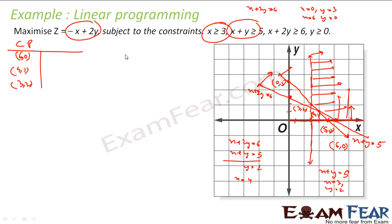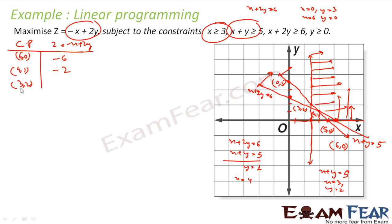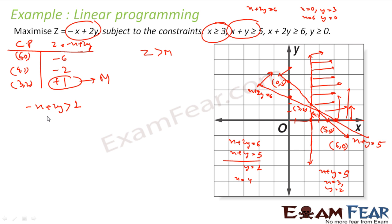Now let me find Z = -x + 2y for all these points. At (6, 0): Z = -6. At (4, 1): Z = -4 + 2 = -2. At (3, 2): Z = -3 + 4 = +1. So the maximum value appears to be 1 at (3, 2), but I am not sure if the maximum actually exists for this unbounded region.